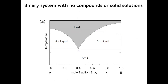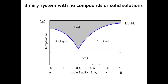There are a couple of vocabulary features to learn here. This horizontal line is called the solidus, and the solidus represents the highest temperature at which no liquid phases are present. Below the solidus we have a two-phase mixture of solids, and above the solidus we have a two-phase mixture of a solid in equilibrium with the liquid.